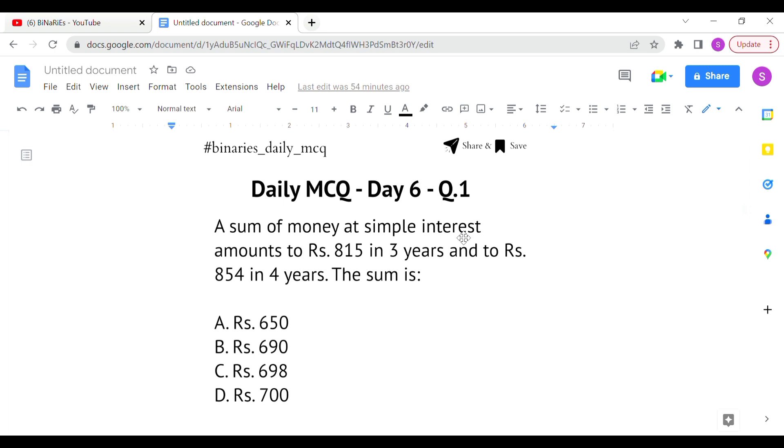First question: A sum of money at simple interest amounts to rupees 815 in 3 years and to rupees 854 in 4 years. The sum is what we need to find. So in 3 years, the simple interest amount is 815. Amount equals principal plus interest. For 4 years, the amount is 854. We need to find the principal amount.